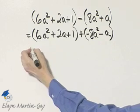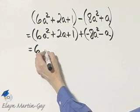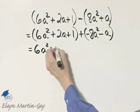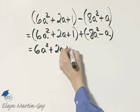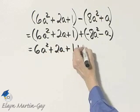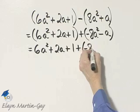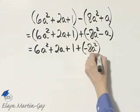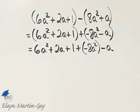And now that I'm adding, let me just take off parentheses. It's 6a squared plus 2a plus 1, and then it'll be plus negative 8a squared. I'll go ahead and write minus a.